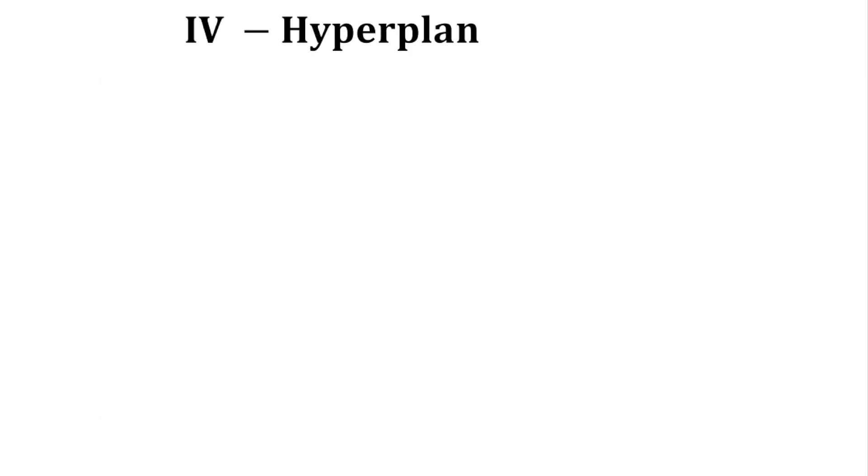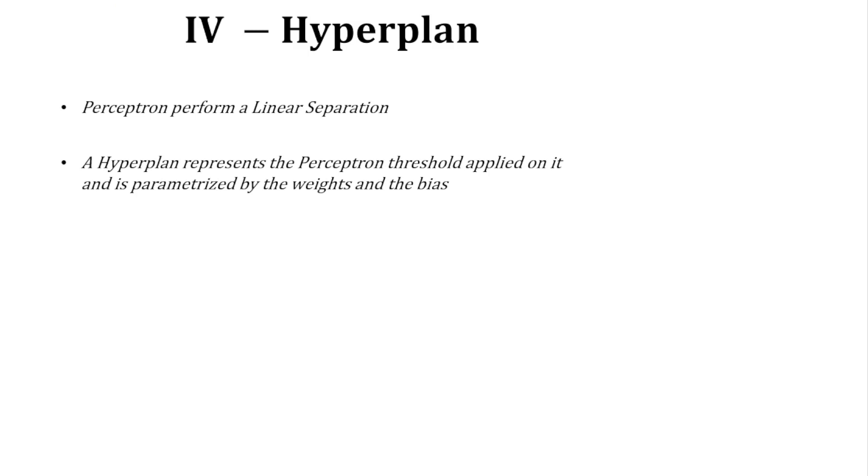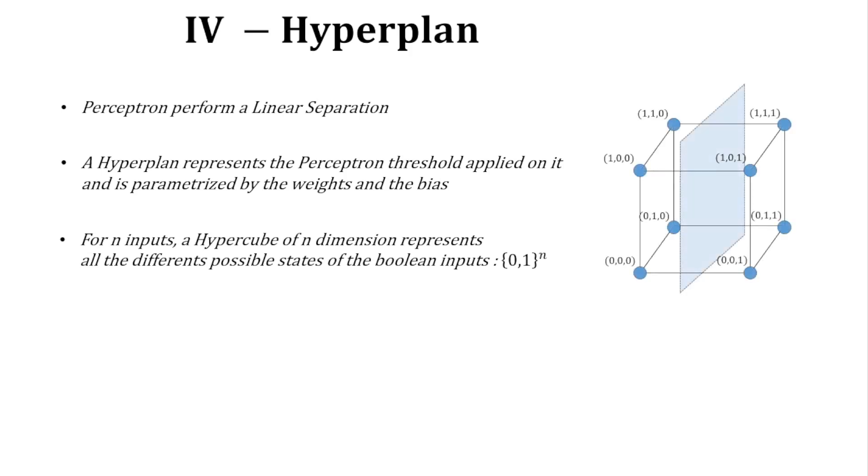So what does it mean for the perceptron? A perceptron of N inputs is applying a linear separation with a hyperplane in N dimensions. The hyperplane actually separates the vertices of the inputs in an N-dimensional hypercube that represents each entry of the truth table.